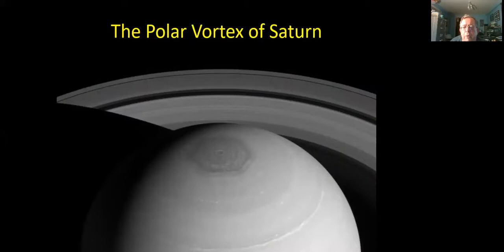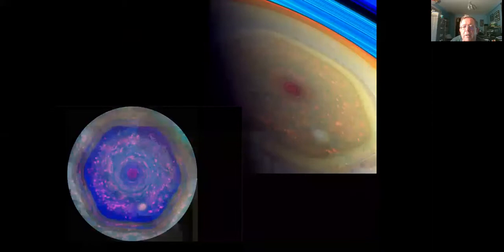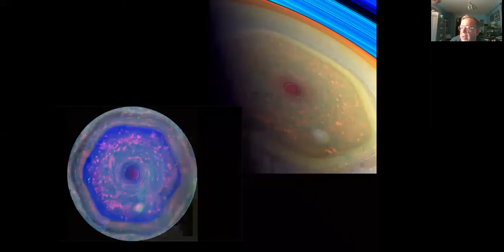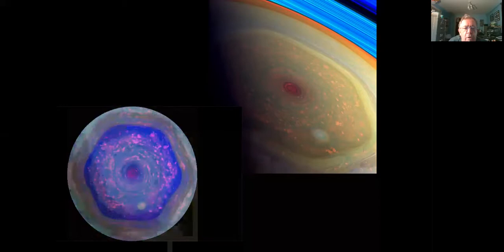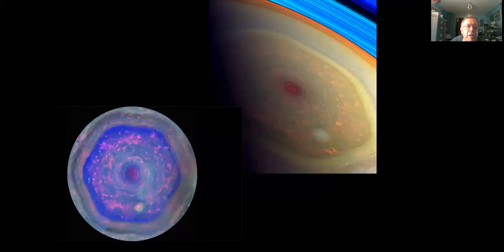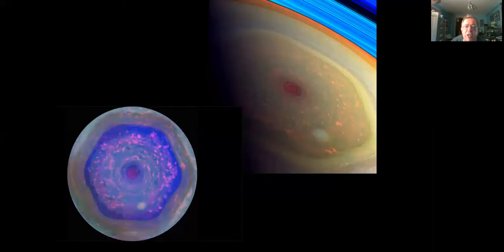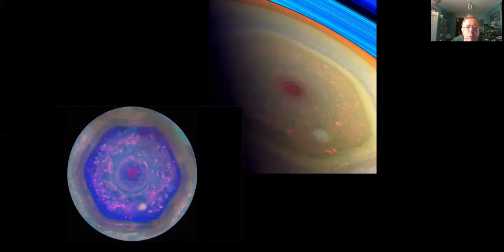The Cassini mission at Saturn took this fantastic picture of the North Pole of Saturn with the giant polar vortex which creates this weird hexagonal arrangement. You've got the rings and the shadow of the rings. This is a consequence of the way that fluid dynamics works in a rotating sphere. We can simulate this sort of thing with a giant ball of liquid in the laboratory and you get the same effect with six vortices surrounding one central one.